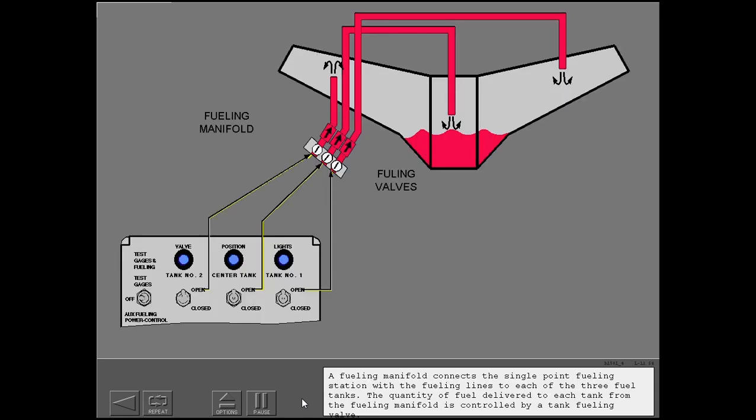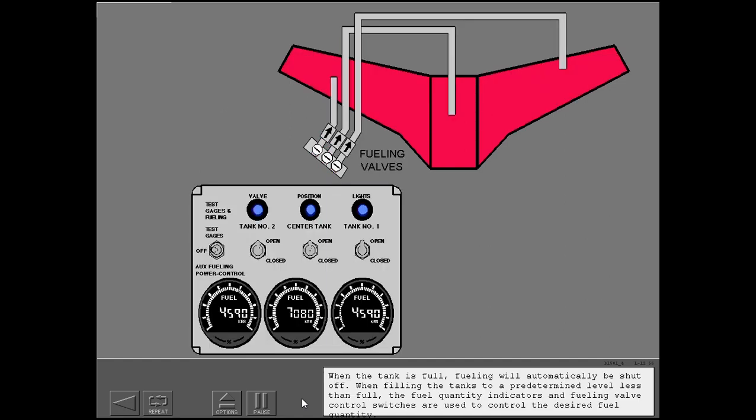A fueling manifold connects the single-point fueling station with the fueling lines to each of the three fuel tanks. The quantity of fuel delivered to each tank from the fueling manifold is controlled by a tank fueling valve. When the tank is full, fueling will automatically be shut off. When filling the tanks to a predetermined level less than full, the fuel quantity indicators and fueling valve control switches are used to control the desired fuel quantity.